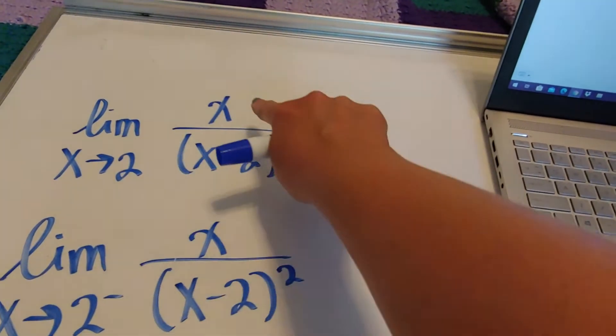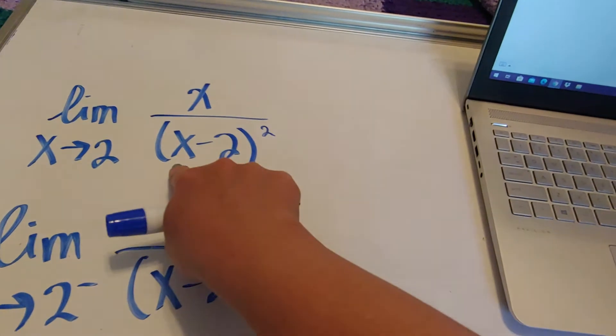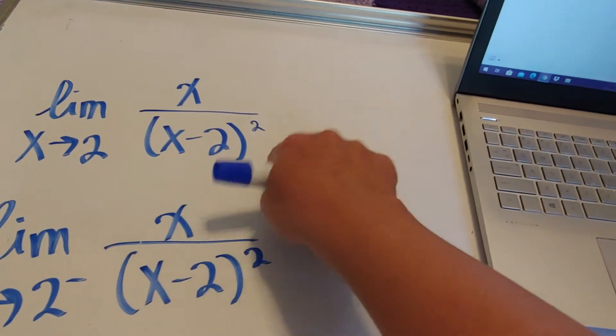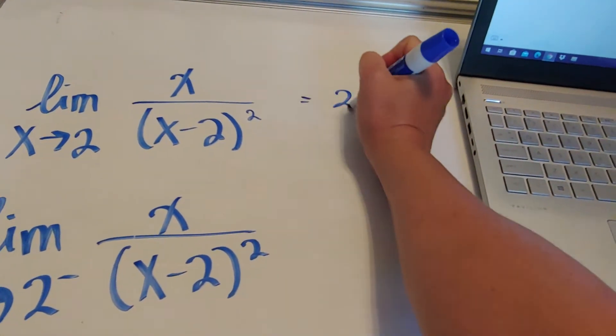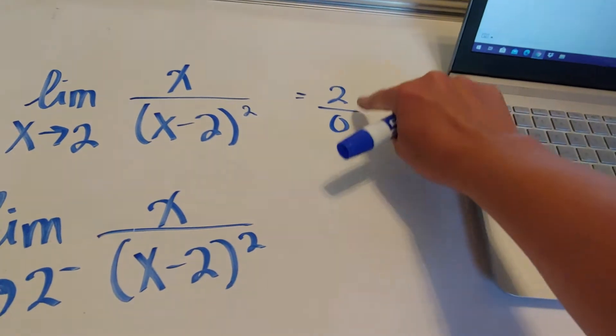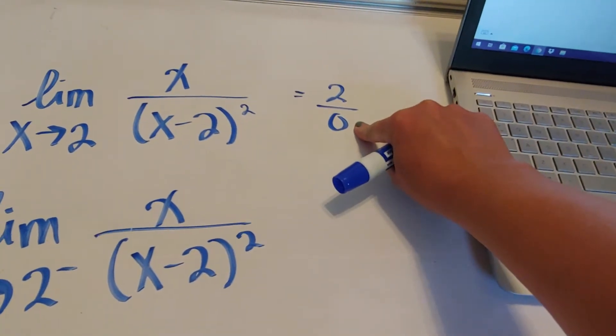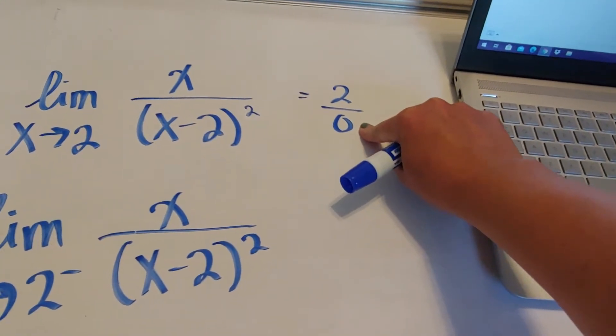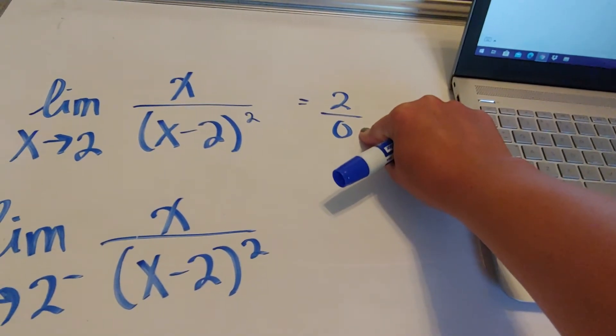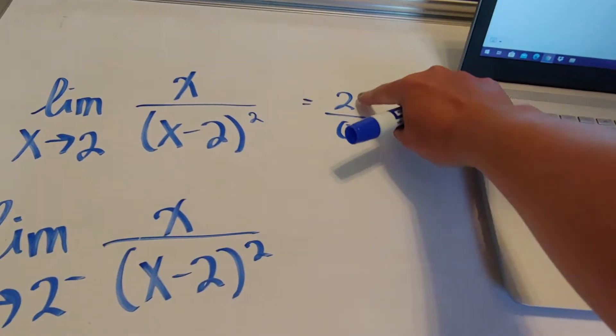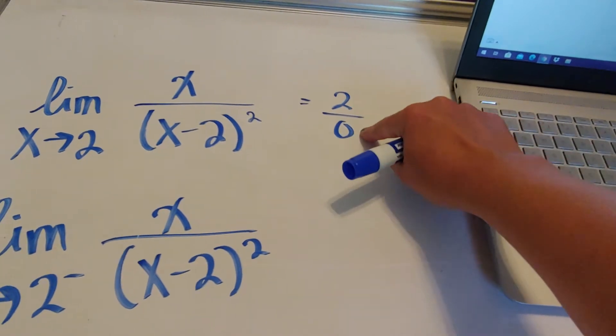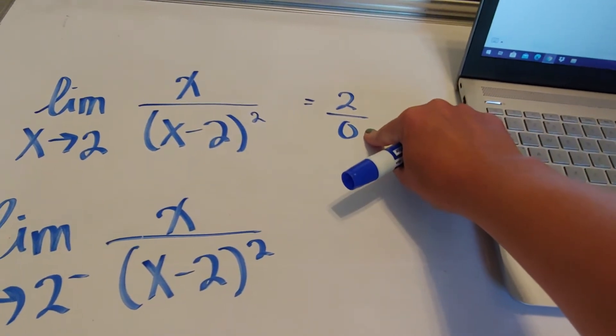When I plug in x is 2, I get 2 over 2 minus 2 is 0 squared, or I get 2 over 0. So when I get a number over 0, that means you're walking near an asymptote, a vertical asymptote. If you get 0 over 0, that's when we are walking at a hole. So a non-zero number over 0 is a vertical asymptote.